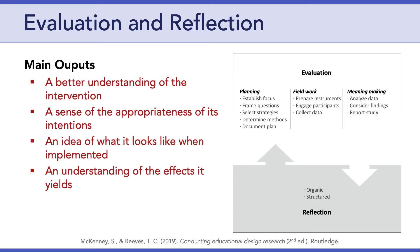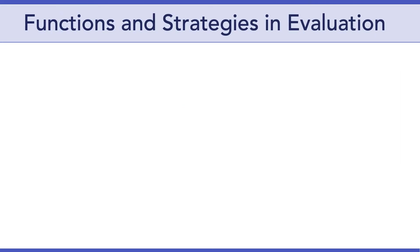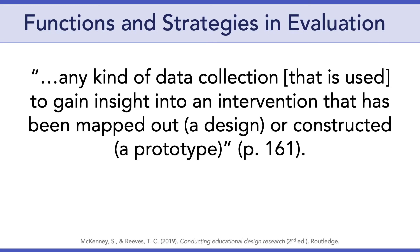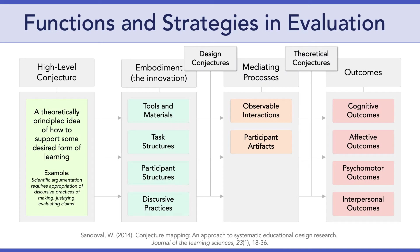The main outputs of evaluation and reflection include a better understanding of the intervention itself, a sense of the appropriateness of the intervention's intentions, an idea of what the intervention looks like when implemented, and an understanding of the effects the intervention yields. One of the most useful aspects of the McKinney and Reeves chapter is how they outline the functions and strategies of evaluation. They define evaluation as any kind of data collection used to gain insight into an intervention that has been mapped out or constructed. As we walk through these, I want you to keep in mind the particulars of your conjecture map and think about how evaluation fits into what you've already defined and specified.